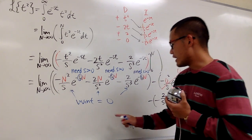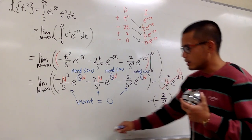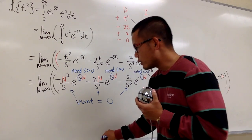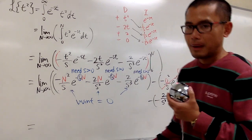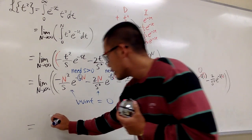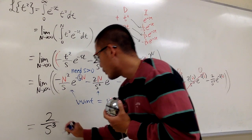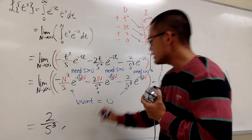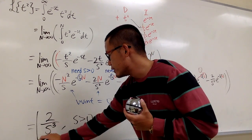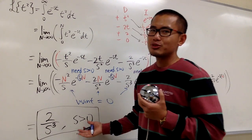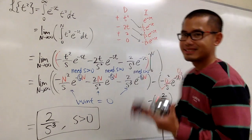At the end of the day, we just have 0 minus negative 2 over s cubed, so the final answer is positive 2 over s cubed, under the condition that s must be greater than 0. This is the Laplace transform of t squared.